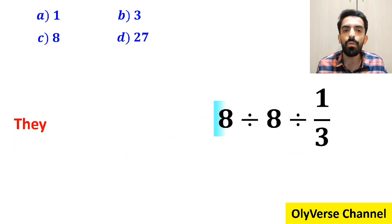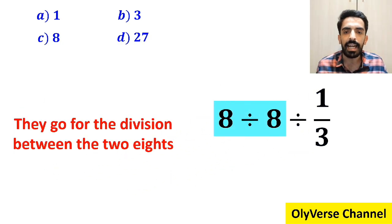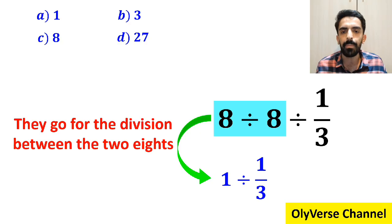In the next step, they go for the division between the two eights and rewrite this expression as 1 divided by 1 over 3, which gives them the answer 3.